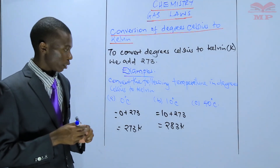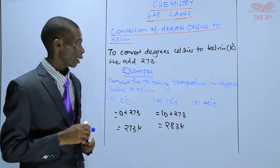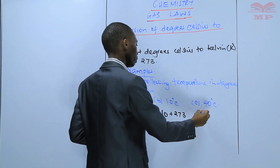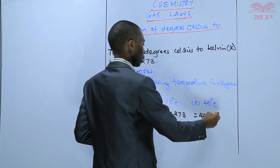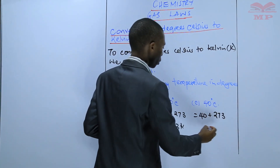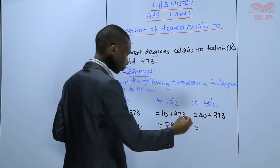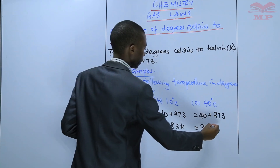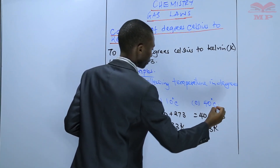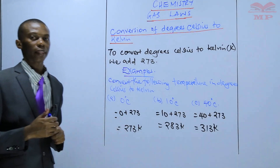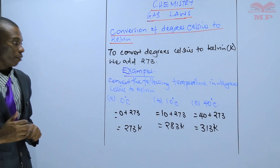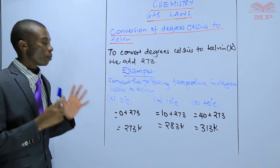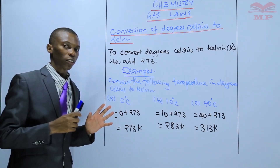The last example is 40 degree Celsius. Again, we add 273. Therefore, it will be 40 plus 273, which gives us 313 Kelvin. That is how we convert temperature from degree Celsius to Kelvin.